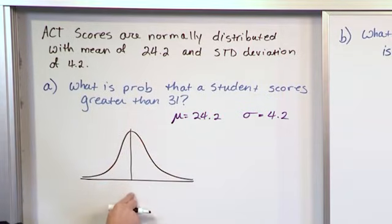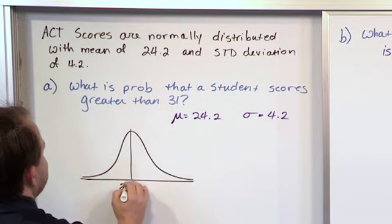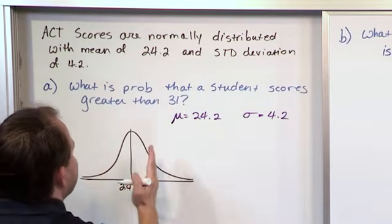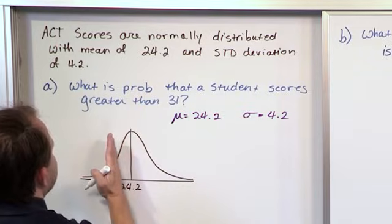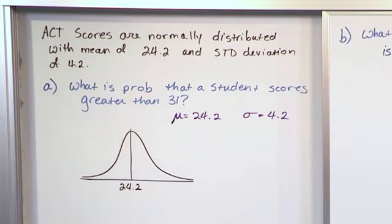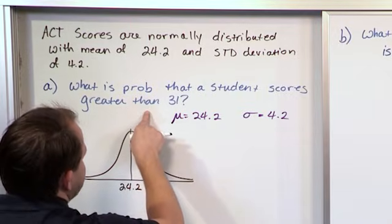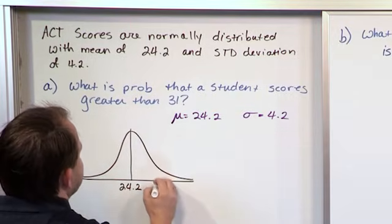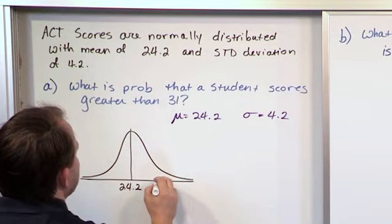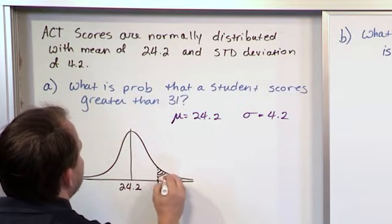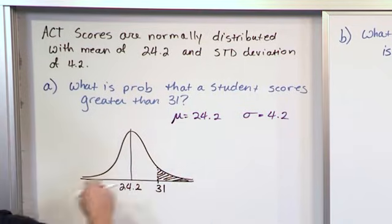The mean value at this distribution is given at 24.2. Standard deviation is 4.2 points, so 4.2 points above and 4.2 points below the mean. So, we want to find what is the probability that the score is greater than 31 for a randomly drawn student. So, what we're after is this right here, because it's greater than 31. We're after that shaded area.